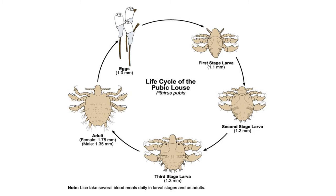Lice feed exclusively on blood and have mouthparts well adapted for this purpose. Delicate stylets are used to pierce the skin, and salivary secretion is injected to prevent coagulation while blood is sucked into the mouth. The stylets are retracted into the head when the louse is not feeding.